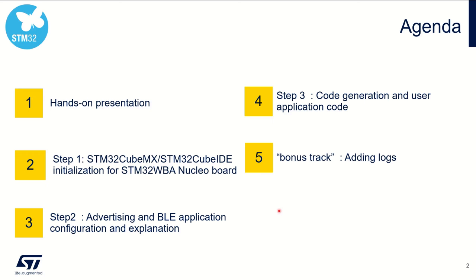In order to achieve this hands-on, we'll go through various steps. First, we'll initialize the hardware. In step two, we'll move into the interesting part: advertising demystification and playing with the BLE API to move to advertising. We'll generate the code and we'll be able to play. And then some bonus track to add logs.